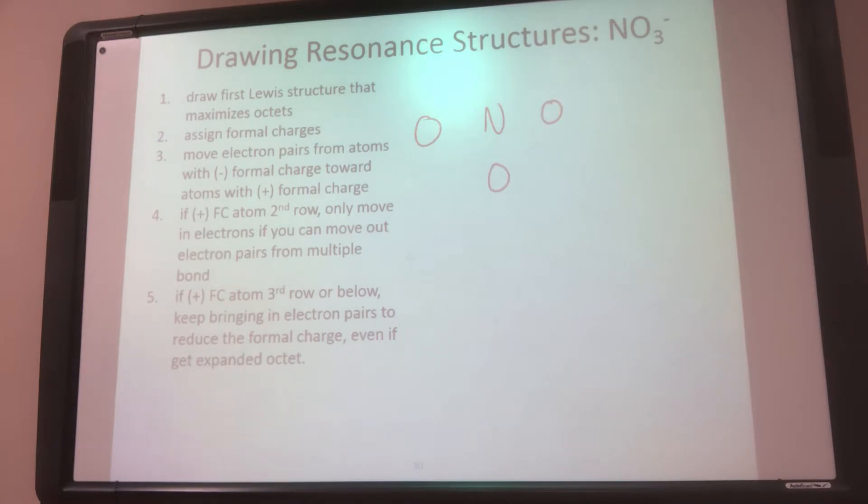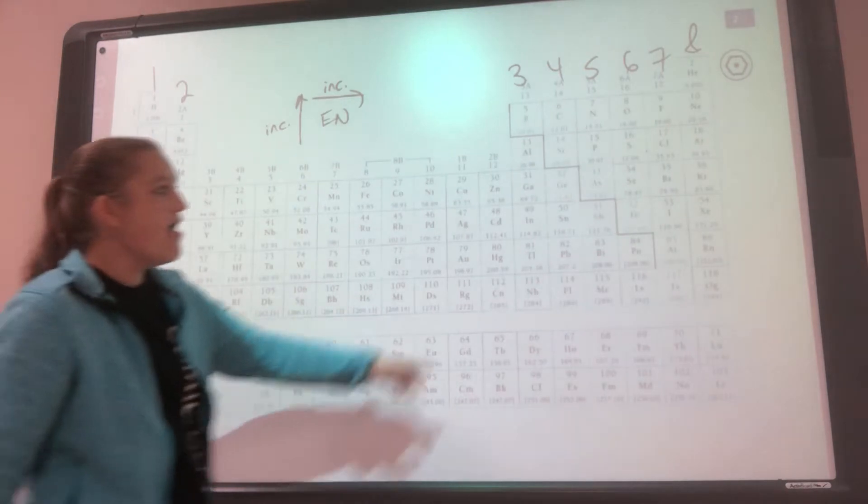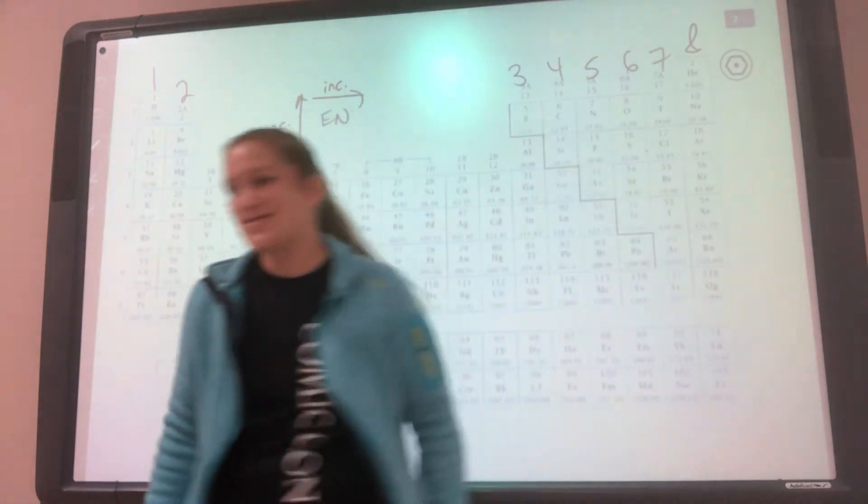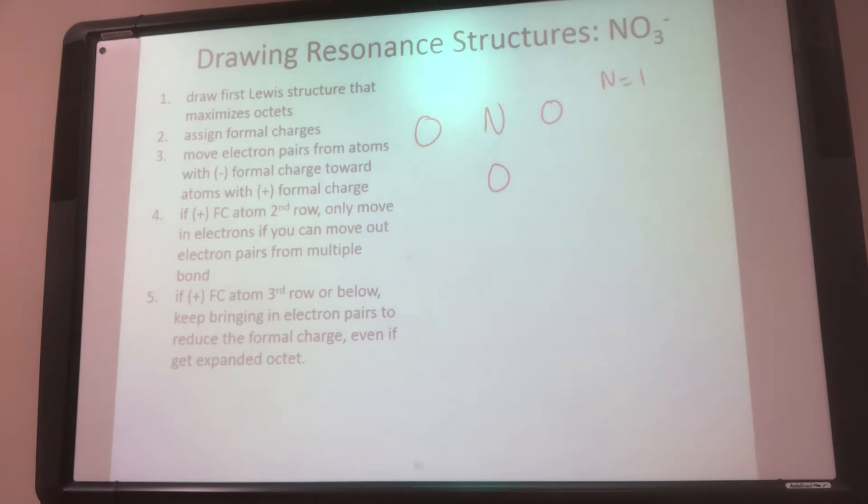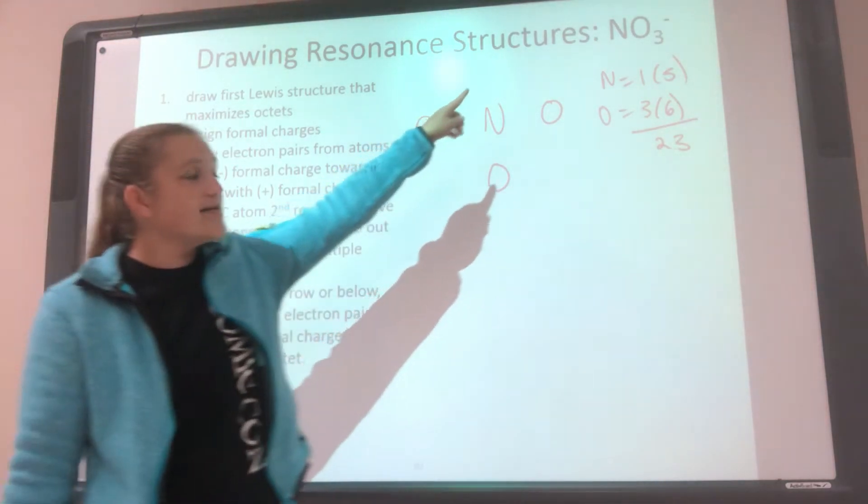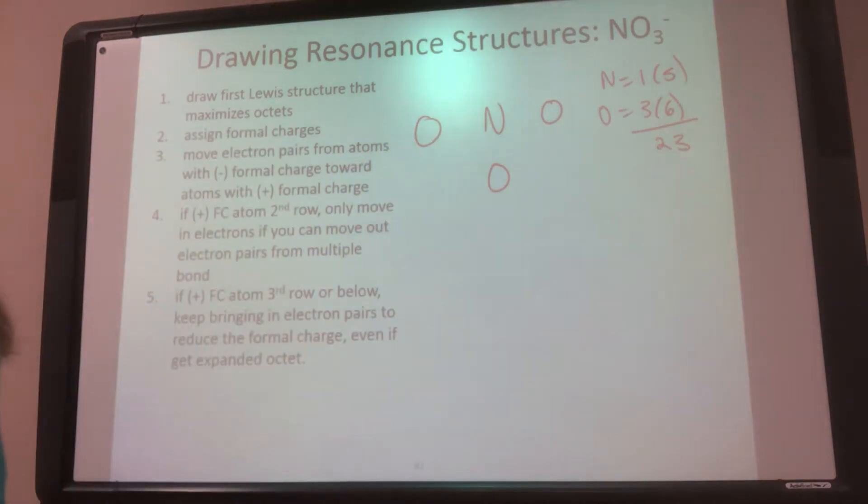Next is to count my electrons. N has 5, O has 6. So now I add up my electrons. N has 5, O has 6. So when I add that up, that's 23. That should be a red flag. The NO3 minus has a negative charge. So if it's a negative 1 charge, that means I add 1 electron.